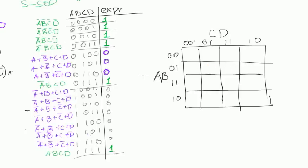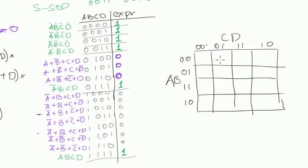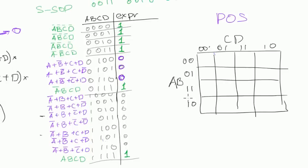Usually, when we dealt with only sum of products expressions, we wrote down only the 1s because that's the only thing we cared about. Now, if we want to simplify an expression into product of sums, then we don't care about 1s — we care only about 0s. So let's write down only the cases that correspond to 0s.